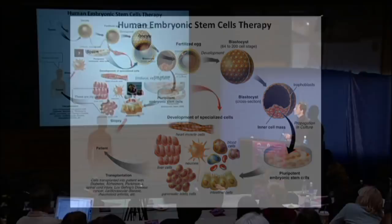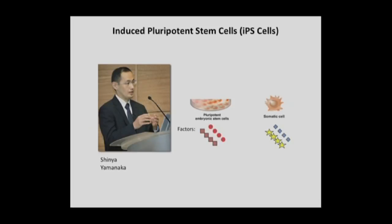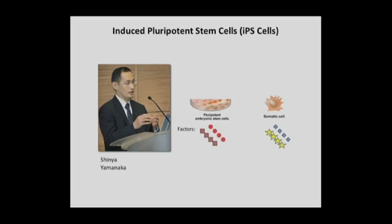The key is how to reprogram a somatic cell into a pluripotent stem cell-like state. This was achieved three years ago in human cells by Shinya Yamanaka. He realized that pluripotent stem cells and somatic cells have their own identity because they express factors specific to their cell type. What Yamanaka did was systematically add pluripotent factors into somatic cells, overexpressing them in the hope of finding a combination that would jumpstart the reprogramming process, ending up with induced pluripotent stem cells. We now know this can be done for several species.